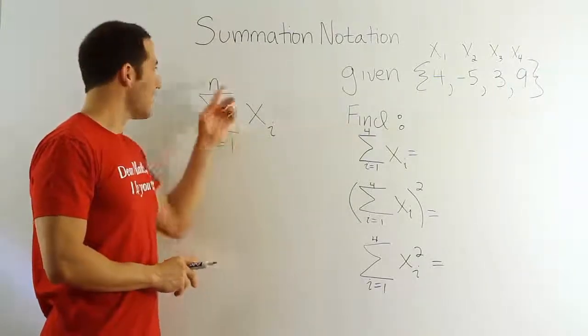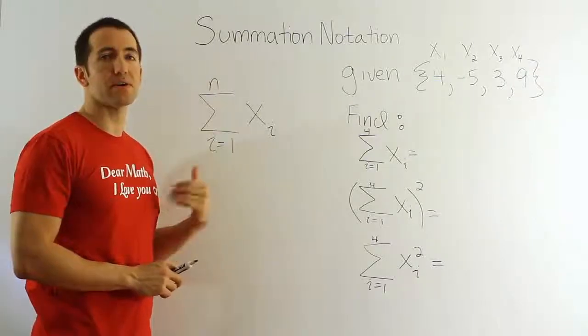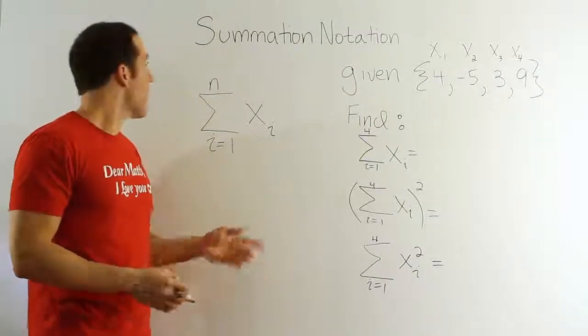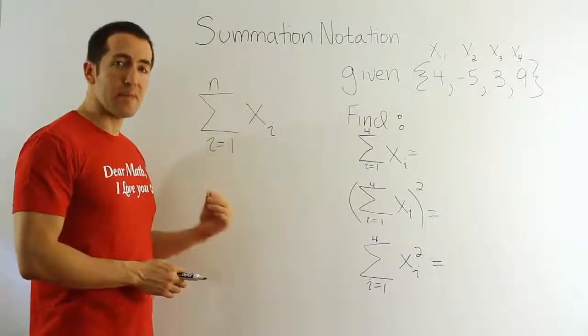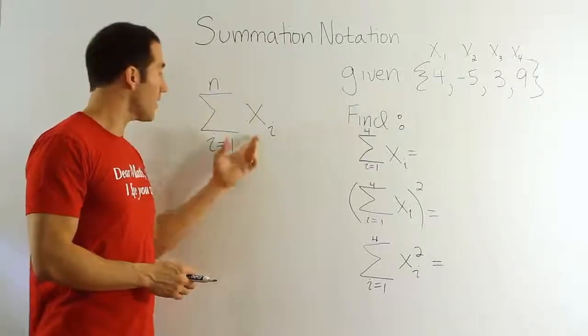Now, in statistics, n would mean all the values, because we use n to represent our sample size. So, in algebra, n is just n - it just means the nth x value. But in statistics, n means the sample size, so from 1 to n means add up all the x values.